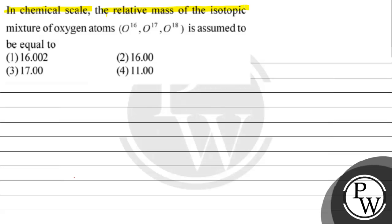The relative mass of the isotopic mixture of oxygen atoms O16, O17 and O18 is assumed to be equal to: Option 1 is 16.002, Option 2 is 16.00, Option 3 is 17.00, Option 4 is 11.00.